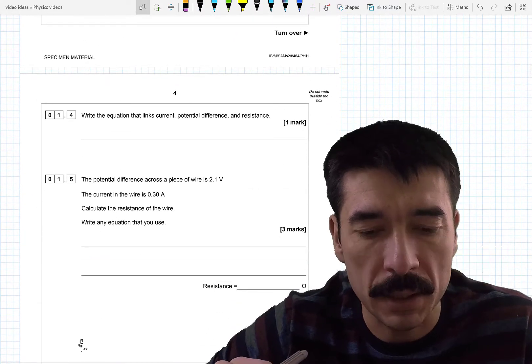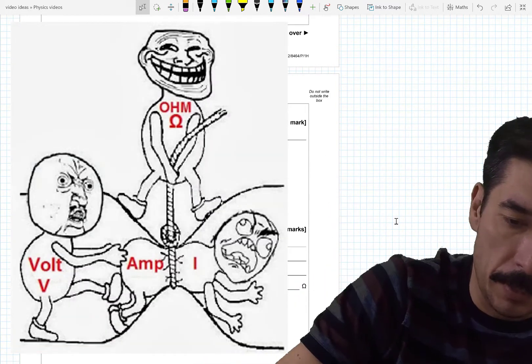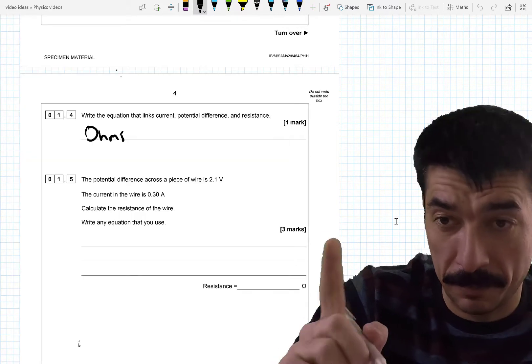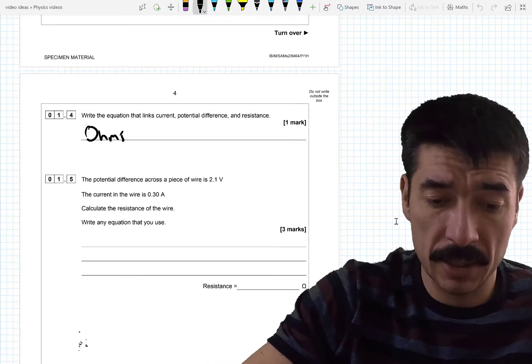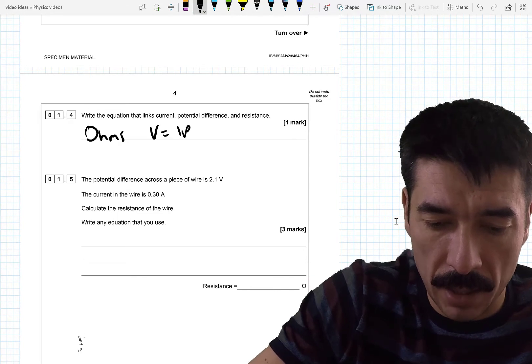Write an equation that links current, potential difference and resistance. Mr. Ohm. Ohm's law. Apostrophe. See that? Mr. English teachers. So Ohm's law would be V equals IR.